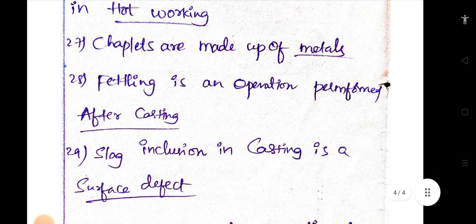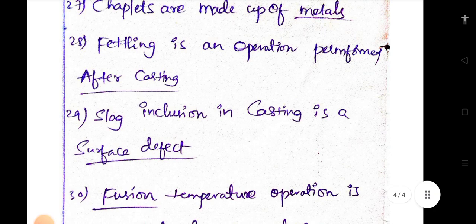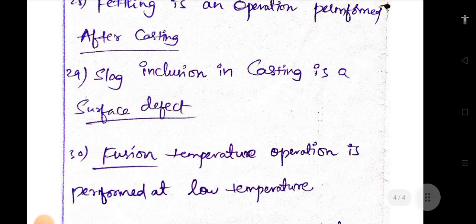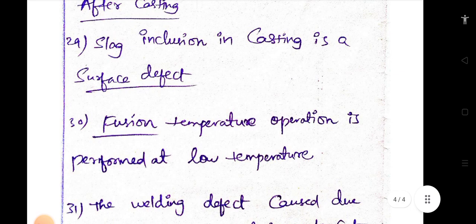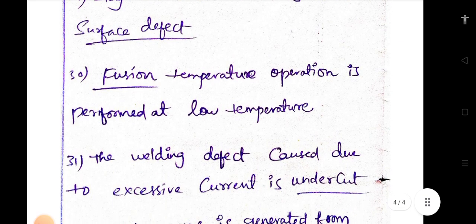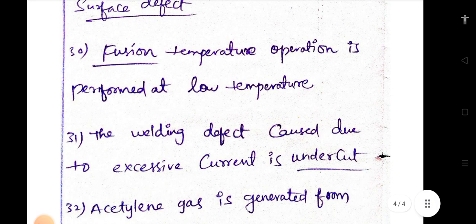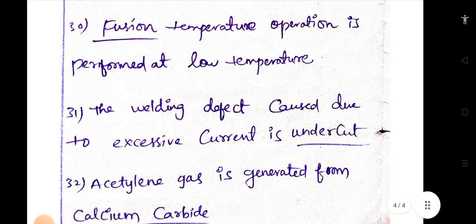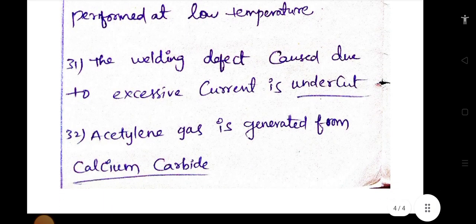Slag inclusion in casting is a surface defect. Fusion welding operation is performed at low temperature. The welding defect caused due to excessive current is undercut. Acetylene gas is generated from calcium carbide.